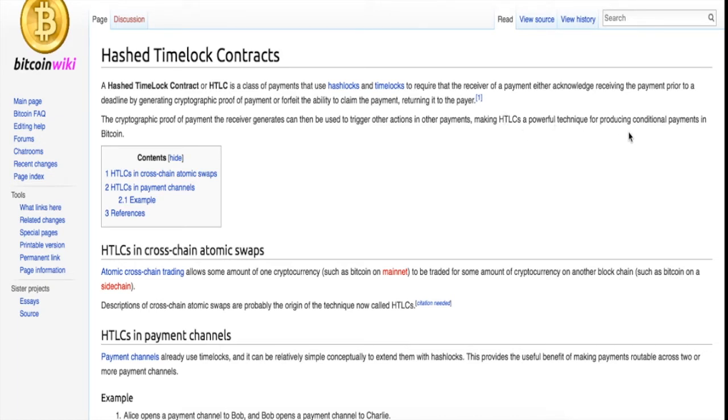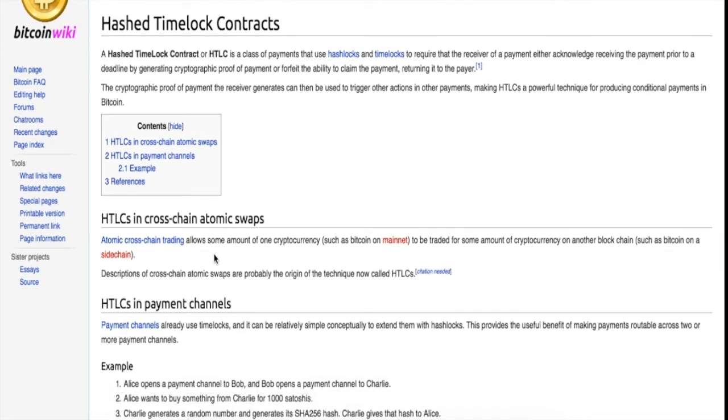The descriptions of cross-chain atomic swaps are probably the origin of the technique HTLCs. If you think about it, the technology that people were using to make cross-chain atomic swaps happen are now called HTLC. That's the background about HTLCs.